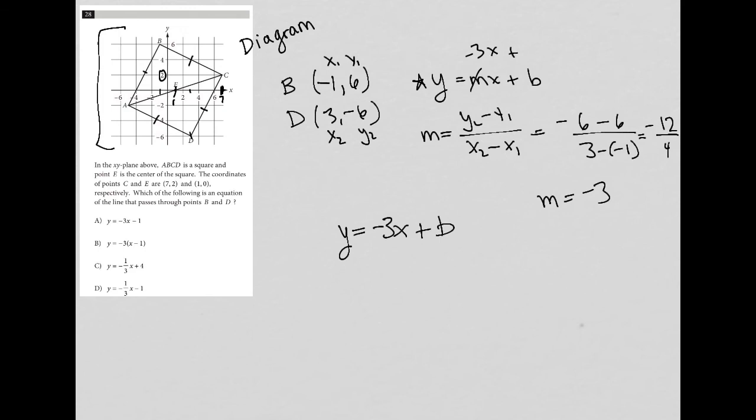So I'm going to go with B. So I'm going to say this is 6 equals negative 3 times negative 1 plus B. So 6 equals 3 plus B, subtract 3 from both sides. And we get B equals 3, which means my equation would be Y equals negative 3X plus 3.